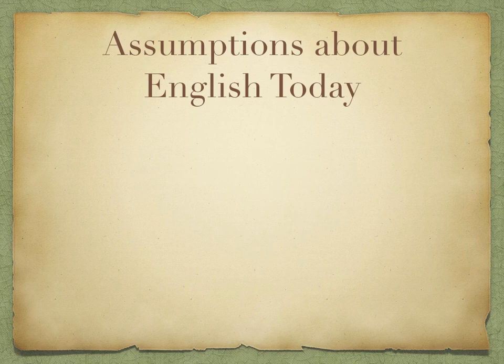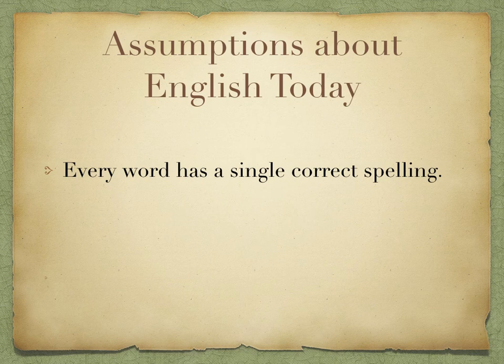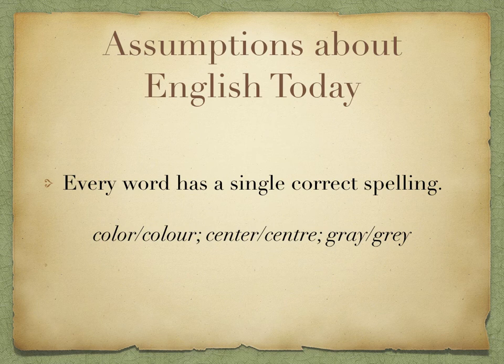I want to begin by considering some commonplace assumptions that we tend to make about our language today. First is the idea that every word has a single correct spelling. If you think about this and spelling variation, you might be able to come up with some examples of words that you know have multiple spellings.